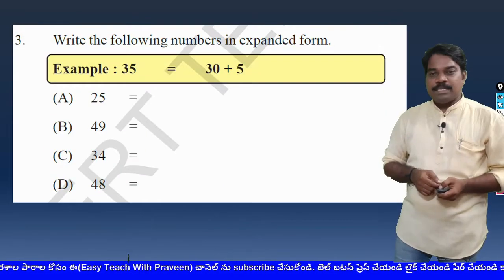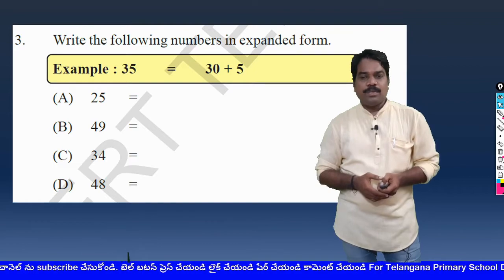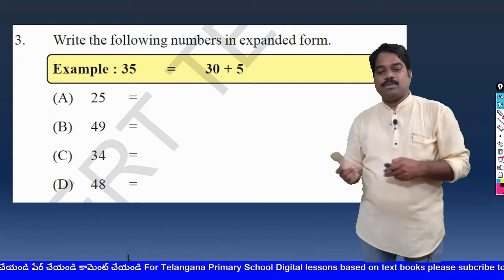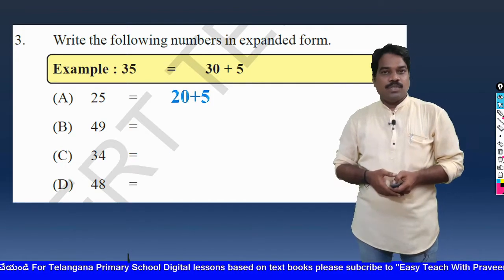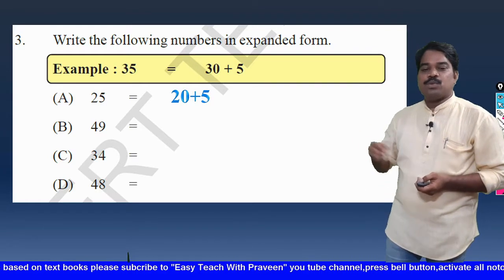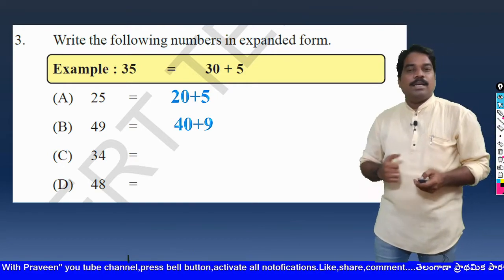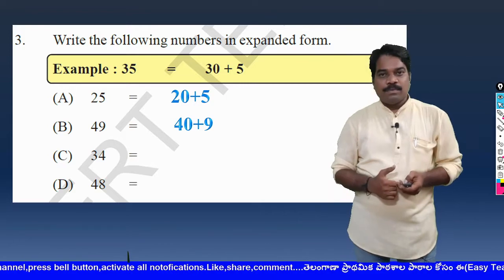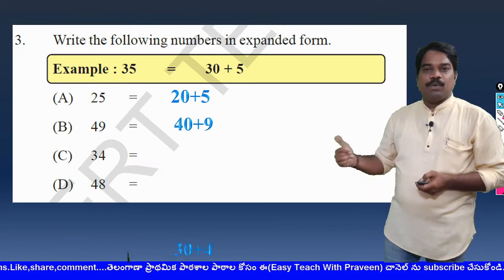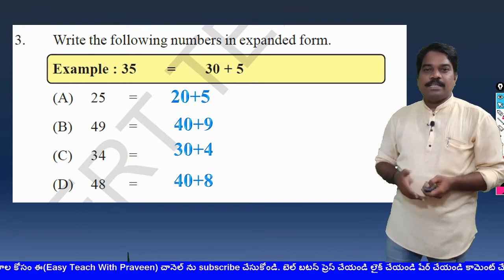Let us do another activity: Write the following numbers in expanded form. For example, 35 equals 30 plus 5. Now the numbers: 25 equals 20 plus 5 — in the tens place we have 2, so 20, and ones place 5. 49 equals 40 plus 9 — tens place 40, ones place 9. 34 equals 30 plus 4 — tens place 3 means 30, ones place 4. 48 equals 40 plus 8. Write them in this expanded form.